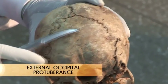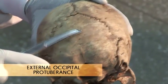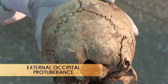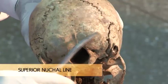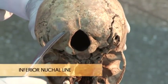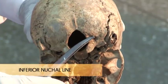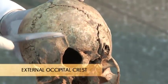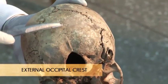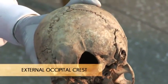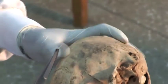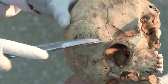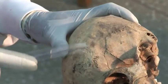Then the external occipital protuberance, the highest occipital line, the superior occipital line, and the inferior occipital line. The occipital crest — the external occipital crest. On the lateral side, we have the temporal lines — the superior and inferior temporal lines.